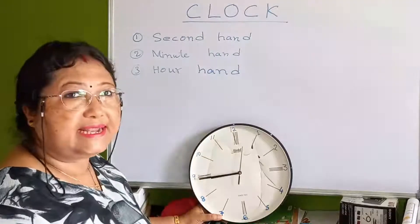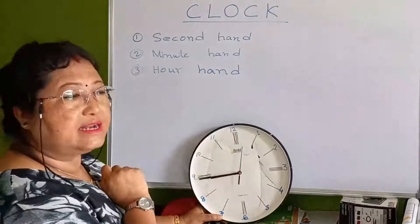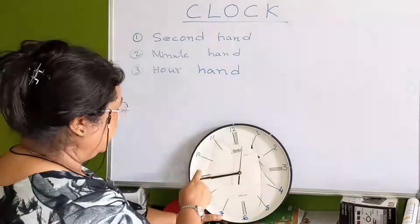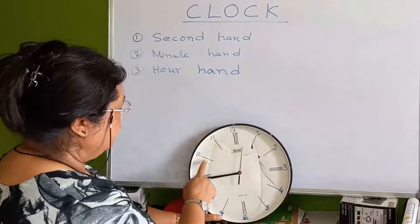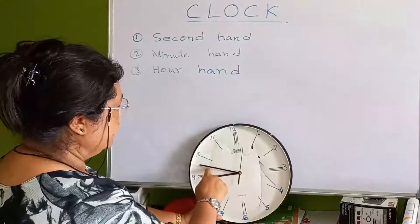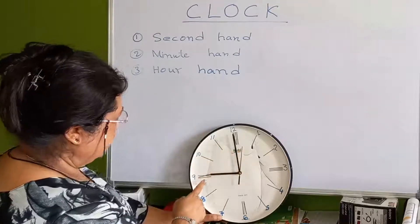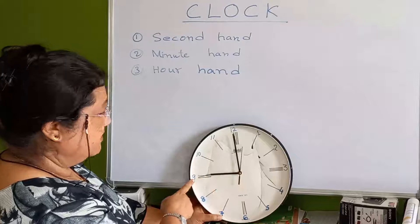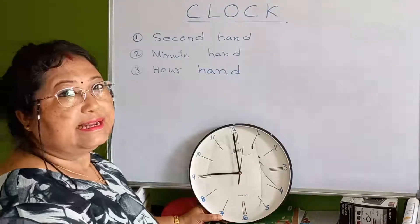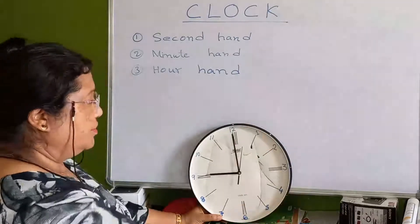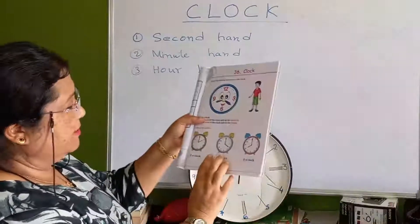When the minute hand keeps moving past 6, it is going toward 9 o'clock. How many minutes are left? From here to here is 5, again 5, again 5 — so 5, 10, 15 minutes left. When the minute hand reaches 12 again and the hour hand is at 9, the time is 9 o'clock.